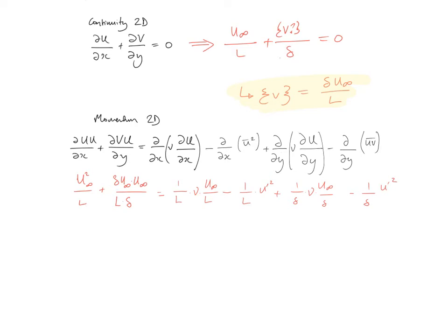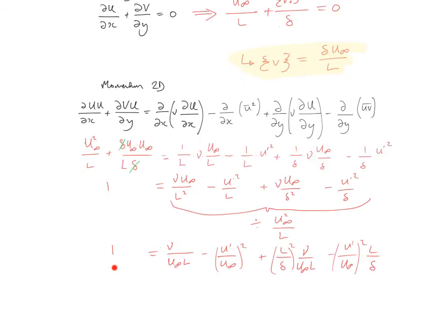Now to tidy this up a bit, you can note straight away that these two terms on the left-hand side are effectively the same. They're both u infinity squared divided by L. And what we do is we combine these, they'll have the same order of magnitude if they're just summed together, and we divide all the terms on the right-hand side by this term, as follows. So on the left-hand side we have 1, on the right-hand side we have all those terms, divided by u infinity squared over L.